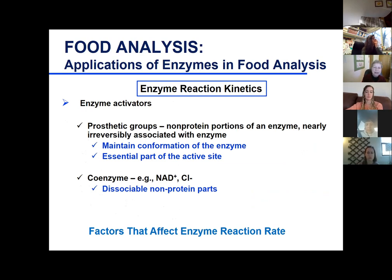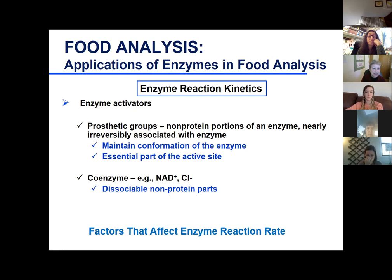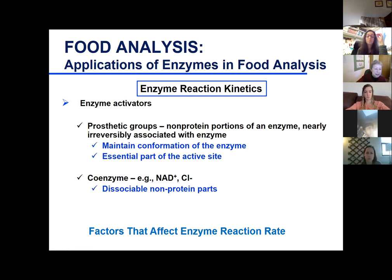Now let's think about activators and inhibitors. Activators are things you need to add to the reaction to optimize it. There are two categories: a prosthetic group that's irreversibly associated with the enzyme, and a coenzyme. An example of a coenzyme is chloride ions added in an amylase assay. For trypsin assays, about 20 millimolar chloride ions were needed for optimal activity as a type of coenzyme.